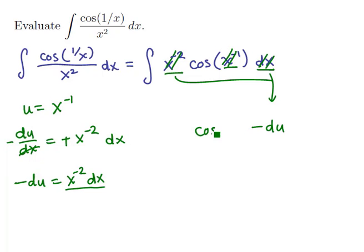The x to the minus 1 can be replaced by a u, so we have cosine of u. And we have the new integral, the cosine of u times negative du. Let's clean that up a little bit. That's just the antiderivative of negative cosine of u du.